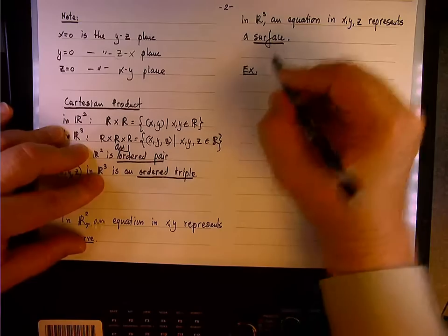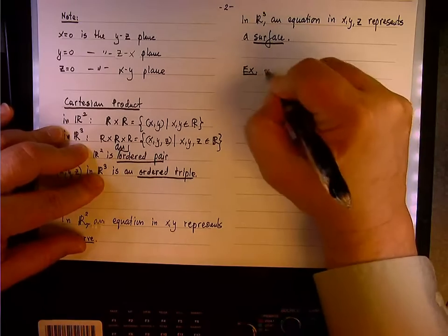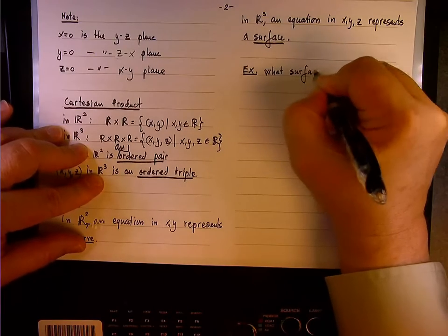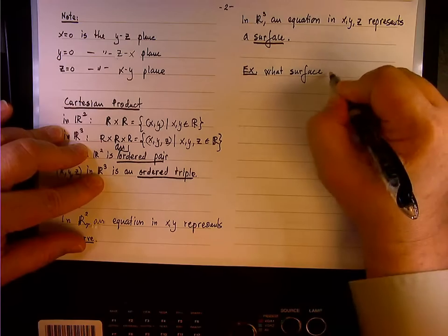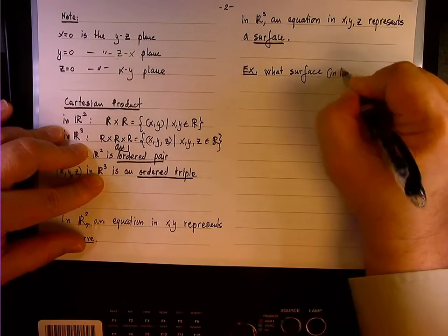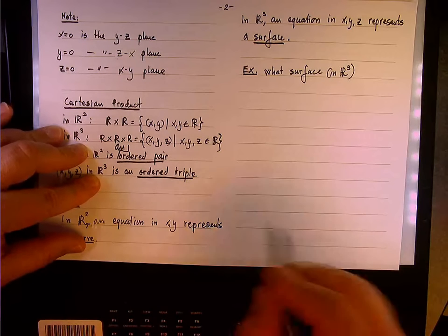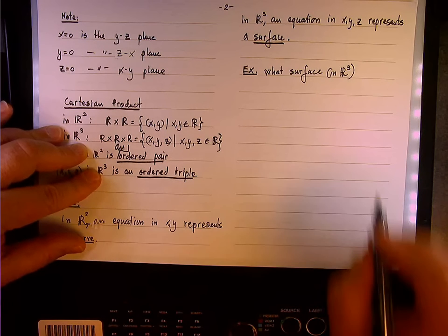So here's the second example. What surface, this is redundant because if you're talking about surface, you're talking about R³, so that's why I put R³ in parentheses.